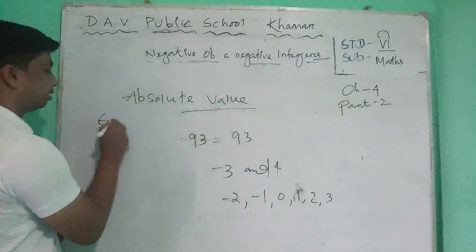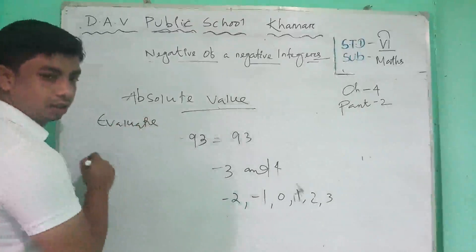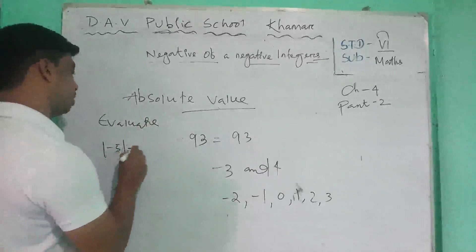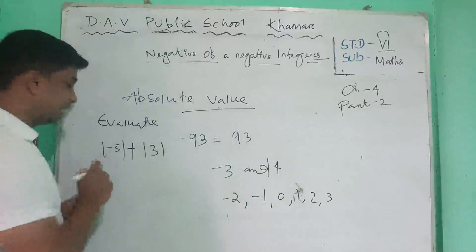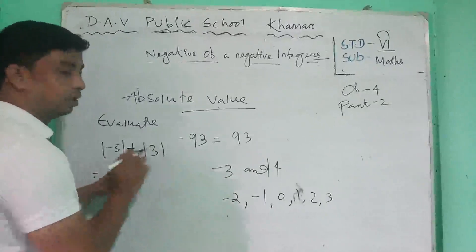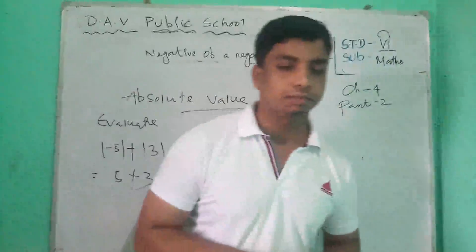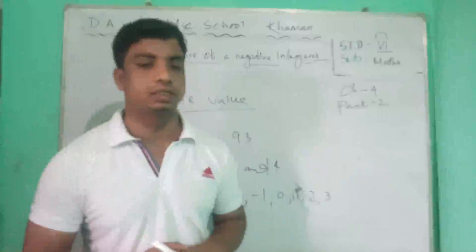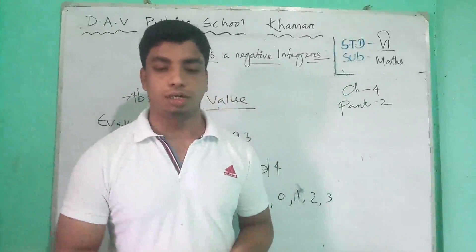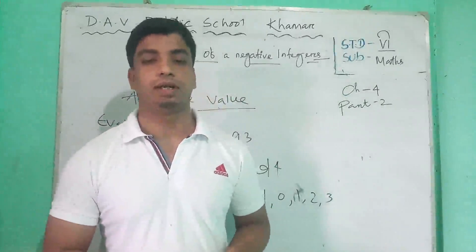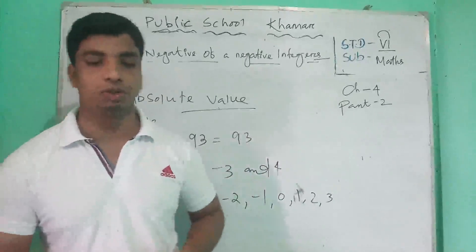Here are questions to evaluate. Evaluate: minus absolute value of minus 5 plus absolute value of 3. Absolute value of minus 5 is 5, and absolute value of 3 is 3, so the answer is 8. Here are some questions for Exercise 4.4a. I will send the questions to your workshop number and you have to send me the answers. I hope this class was meaningful to you. Thank you.